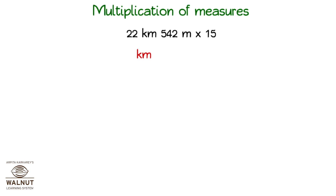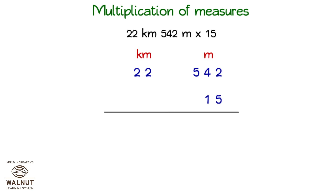Multiplication of Measures. We write the units, and below that we write the measures. Then we get ready to multiply. Look at the unit under Meters — we can see that we have to adjust it. We know that 1000 meters is equal to 1 km.